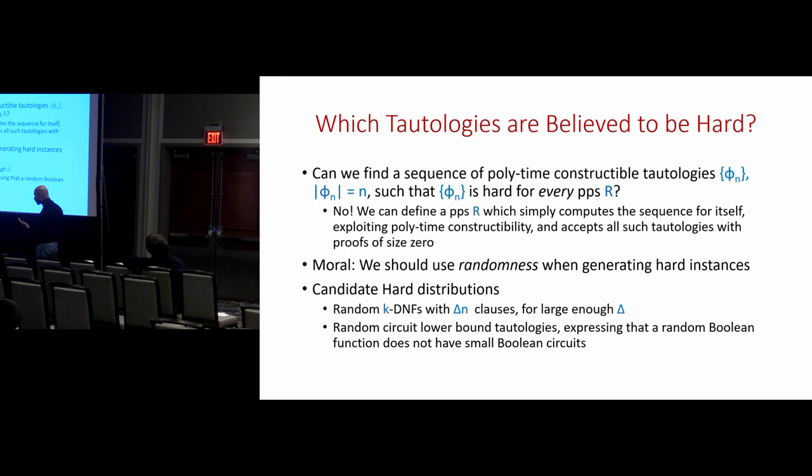We're interested in which tautologies are believed to be hard — the hard candidates. We'd like hard candidates we can get our hands on explicitly. Can we find a sequence of polynomial-time constructible tautologies φ_n, where |φ_n| = n, such that φ_n is hard for every propositional proof system?